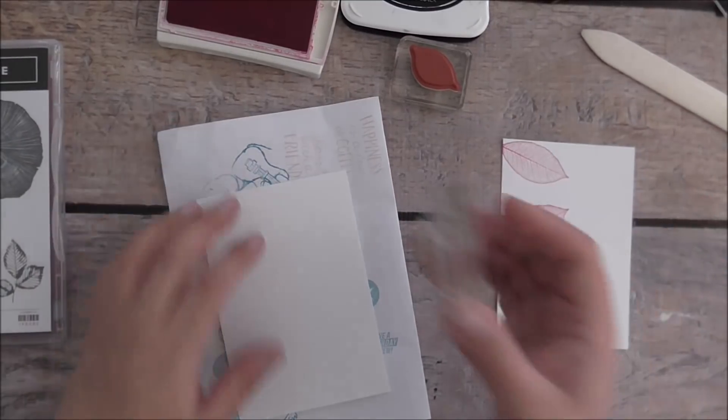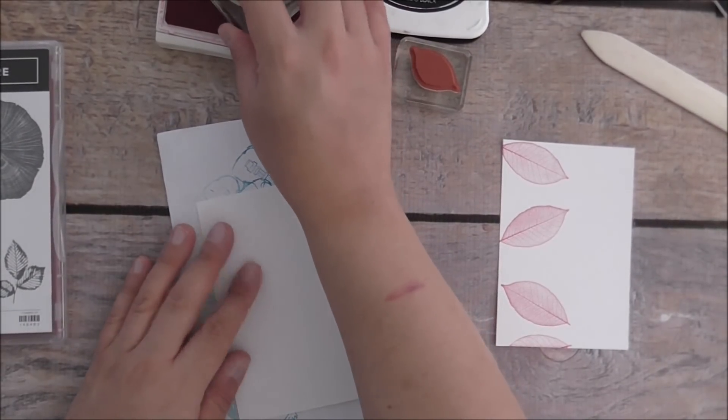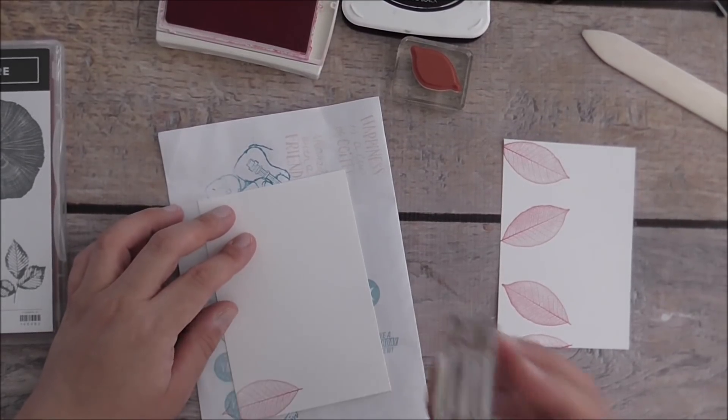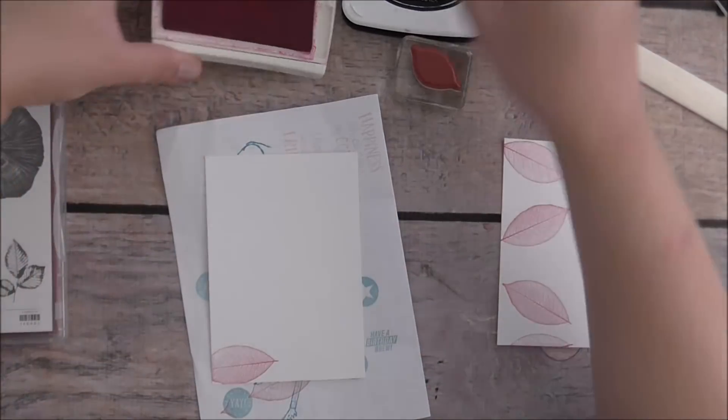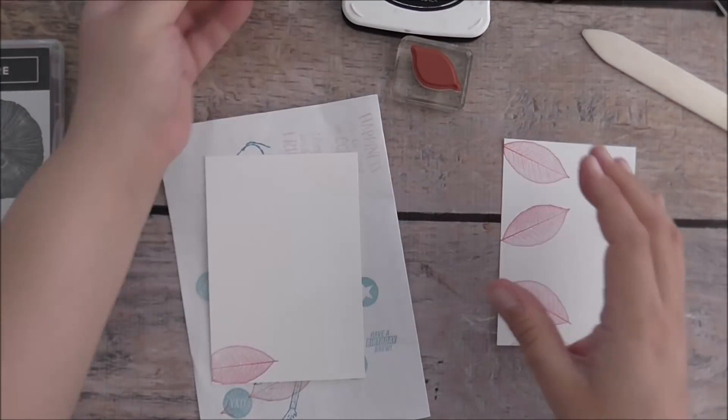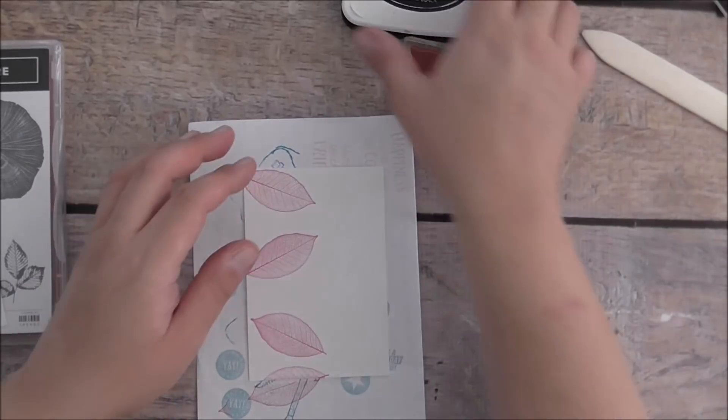For the inside, since I've got the Melon Mambo out, I'm just going to stamp along the bottom there with the leaf. I'll pop that to one side, close my ink pad up, and bring that other one.